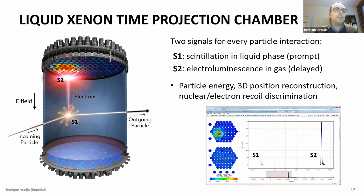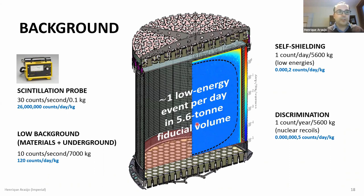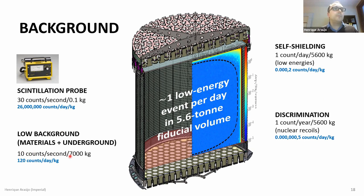The ratio of the S2 to S1 signal also tells you which type of interaction occurred. A large S2/S1 ratio indicates an electron recoil; a smaller S2 for the same S1 indicates a nuclear recoil. We also have 500 independent PMT timelines. From the ~30 counts per second in that small scintillation probe, switching to LZ with all its low-background construction and underground location, we expect about 10 counts per second — but across 7 tons of active material — giving 120 counts per day per keV, vastly better.